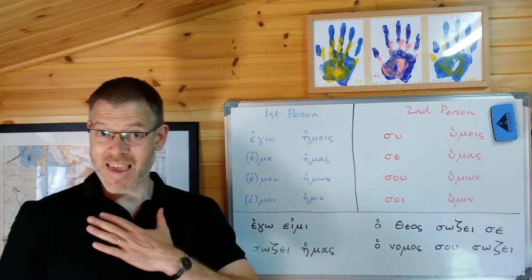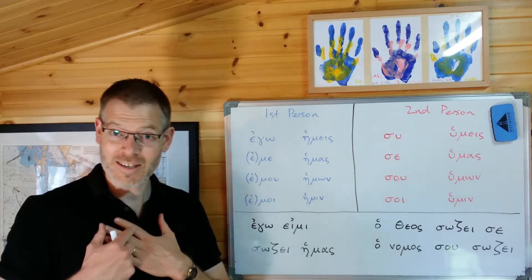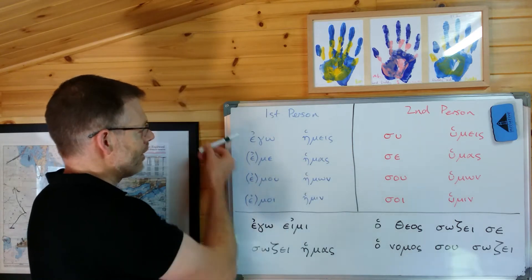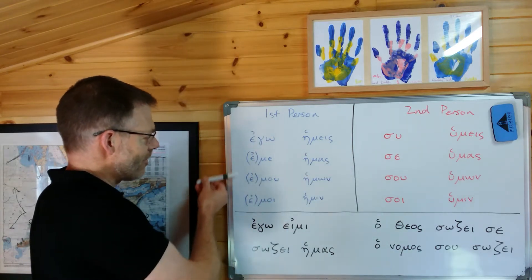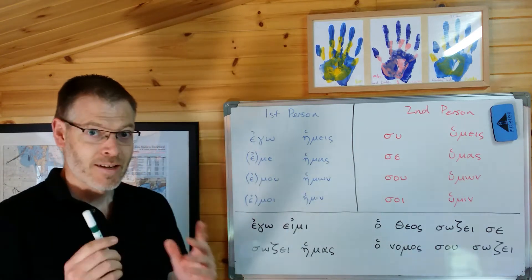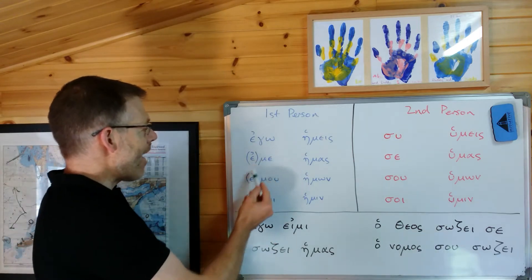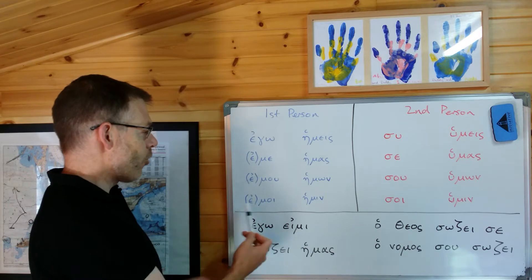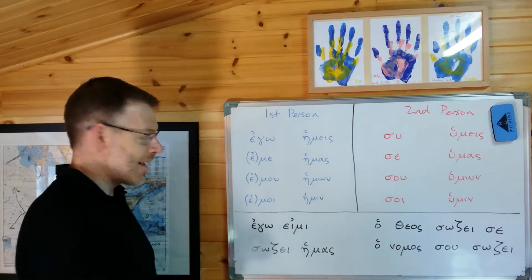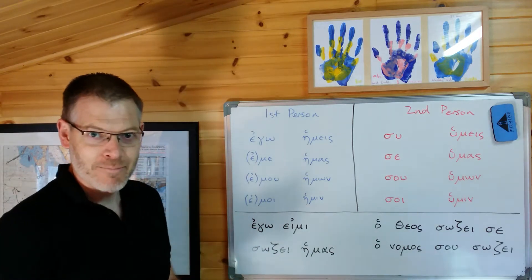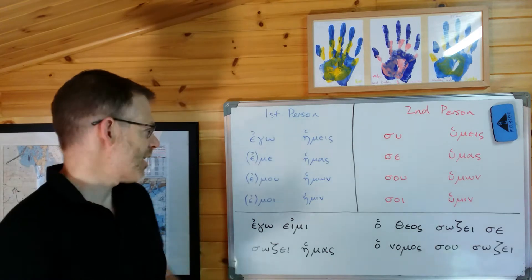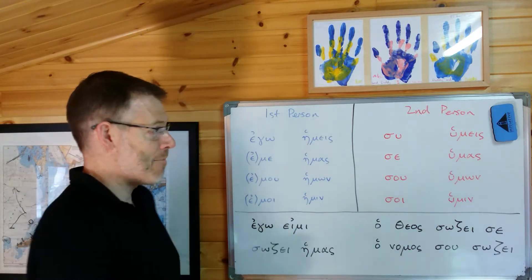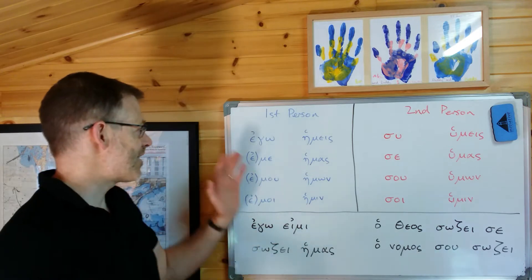As ever: singular, plural, nominative, accusative, genitive, dative. Notice: ego, eme or me, emu or mu, emoy or moi. The epsilon at the beginning is removable in some contexts - sometimes with it, sometimes without it. Here's the plural: hēmeis, hēmas, hēmōn, hēmin. That's the first person.